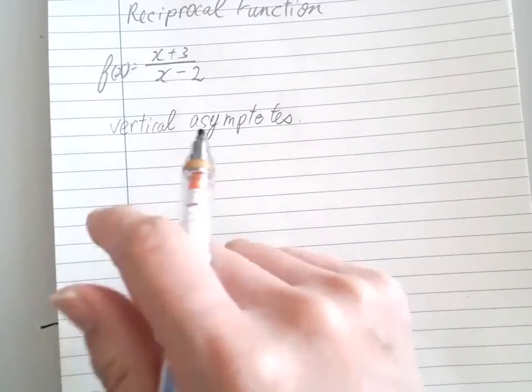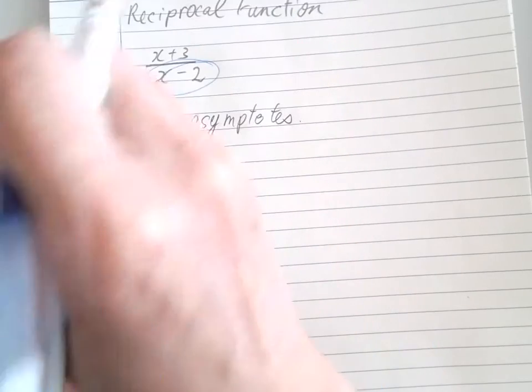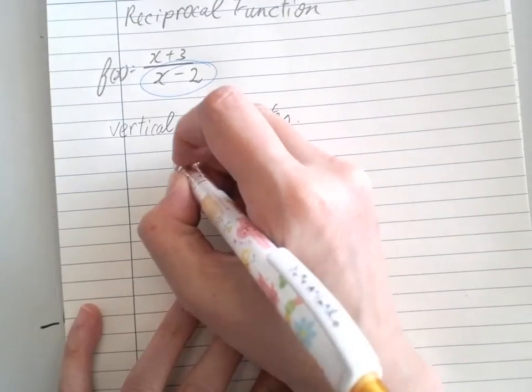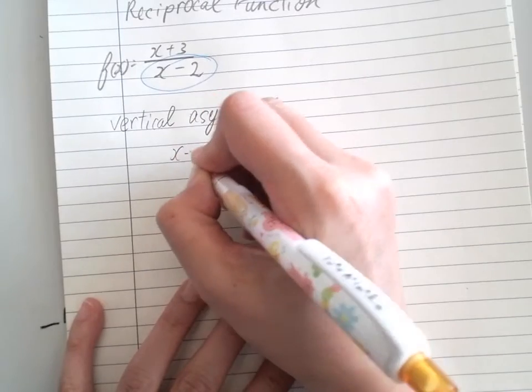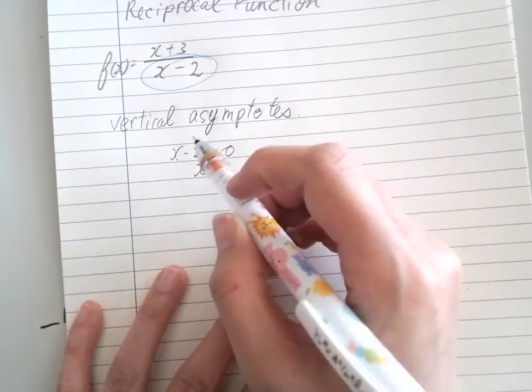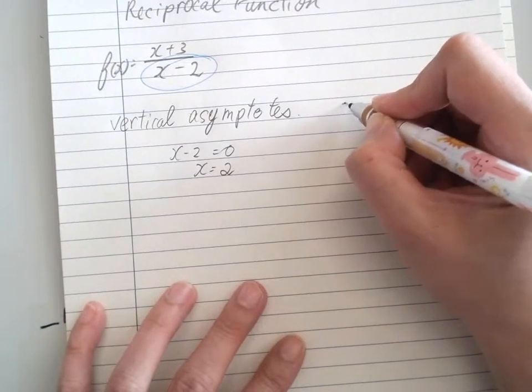Vertical asymptote is when the denominator equals zero. We do not want it to equal zero, so x-2=0, which means x=2. When x equals 2, the denominator will equal zero. Therefore, the vertical asymptote will be x=2. That is the line the function never crosses.